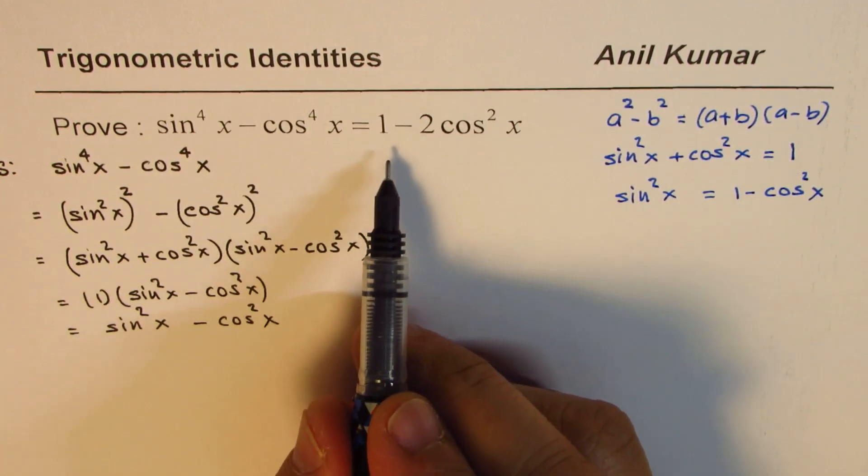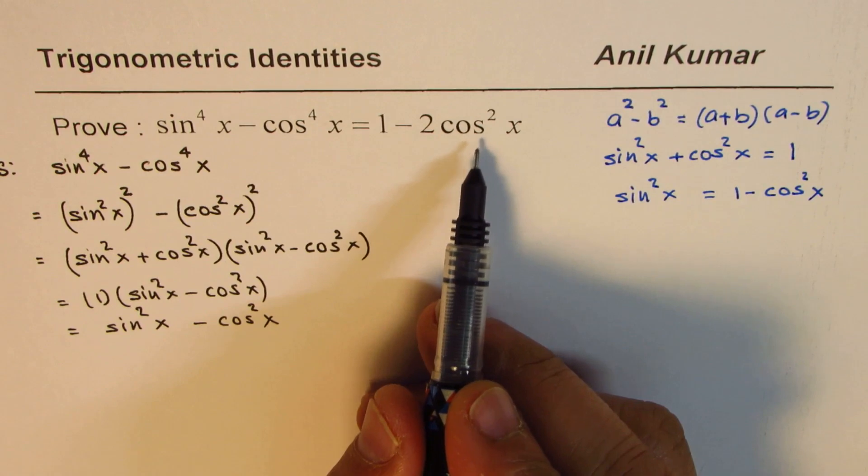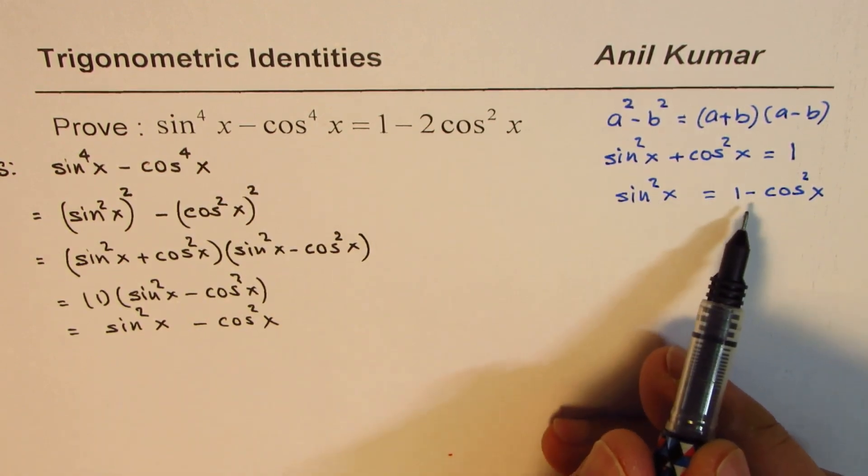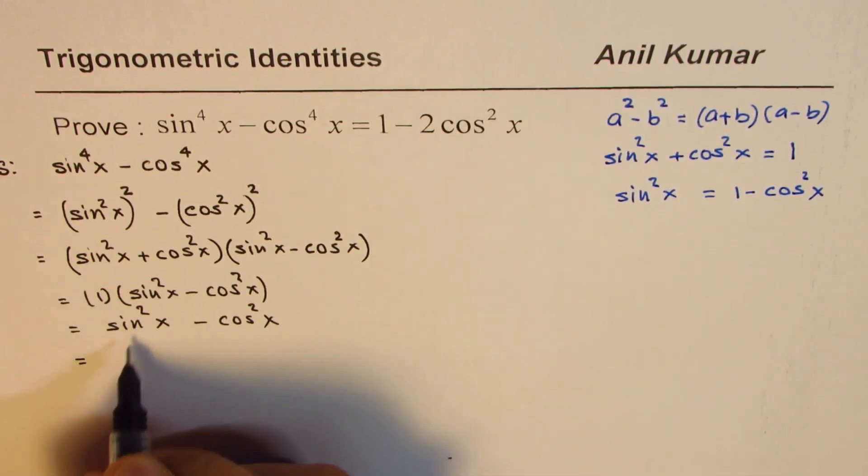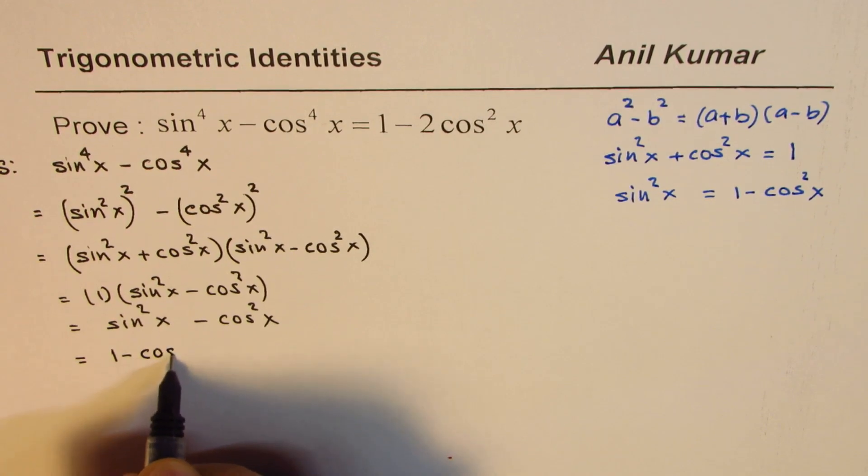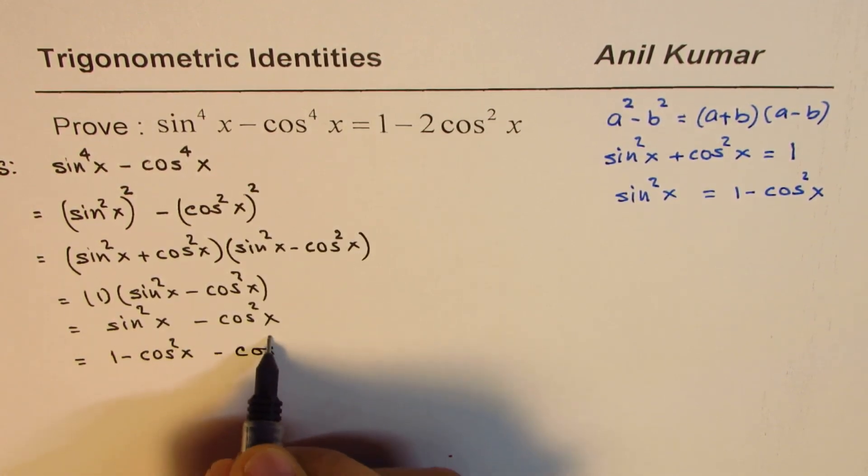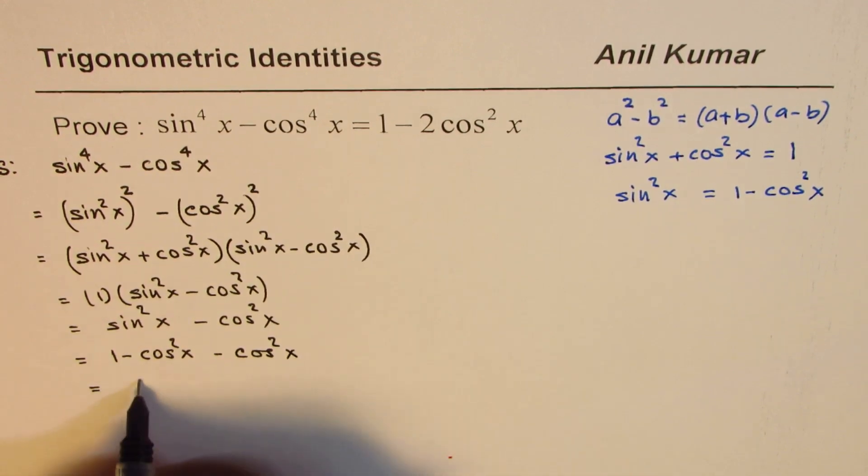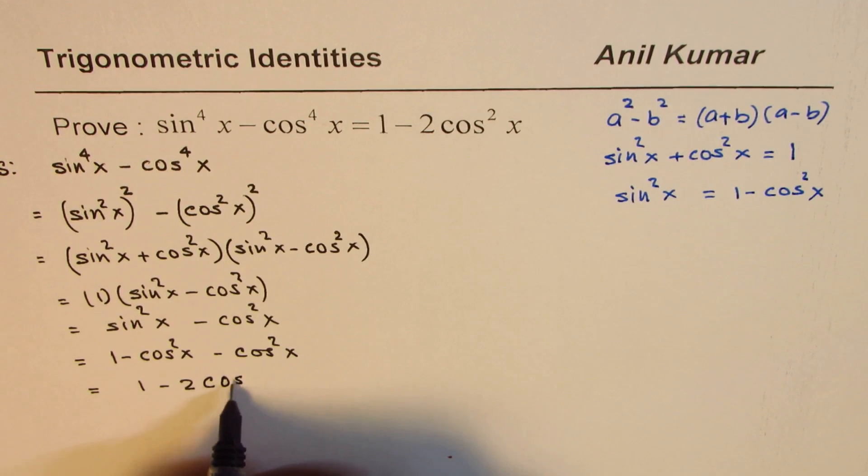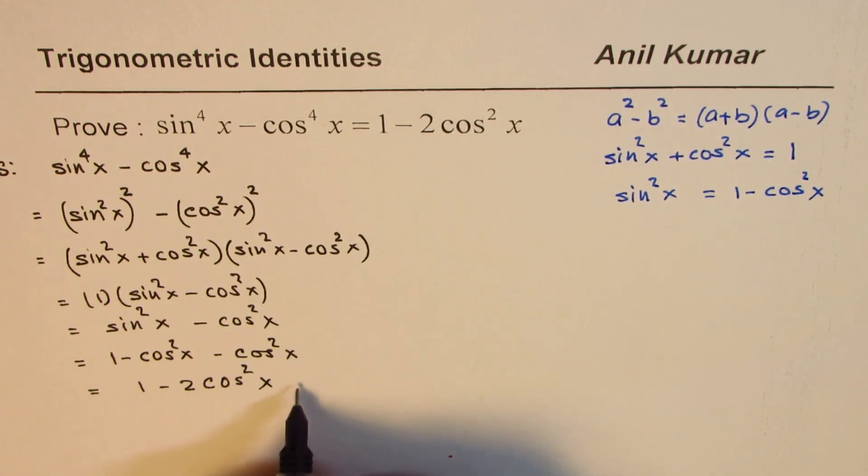We are looking for 1 minus 2cos²x. So let's write sin²x as 1 minus cos²x. So substitute (1 - cos²x) for sin²x. So that is your right side.